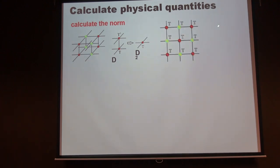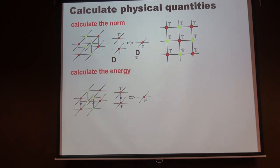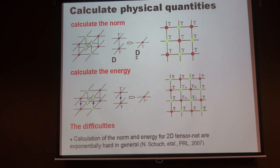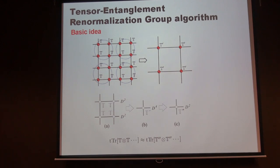For computing physical quantities like the ground energy, you have a double-layer tensor network with an operator inserted between the two physical layers, again forming a network with some included tensors. The computational cost is also exponentially hard — in fact, there are rigorous proofs from quantum information theory that this is even harder than NP-hard. So computing the norm and energy of tensor network states exactly is fundamentally intractable.